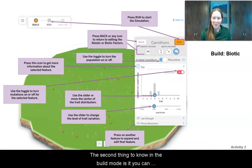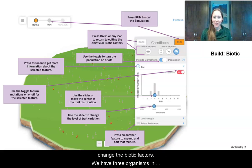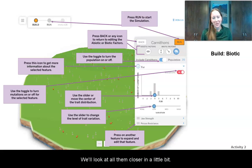The second thing to know in the build mode is that you can change the biotic factors. We have three organisms in our environment: thorn palms, ostrilopes, and carnifons. We'll look at all of them closer in a little bit. The thing to know though is they have different traits and we'll look at differences in those traits.